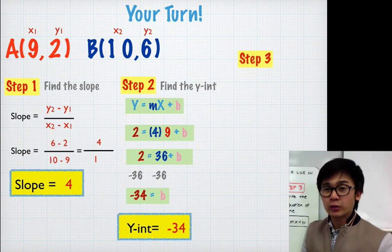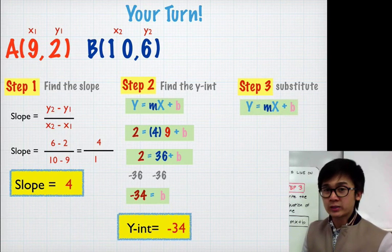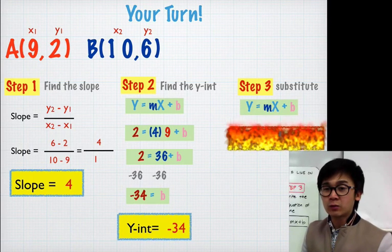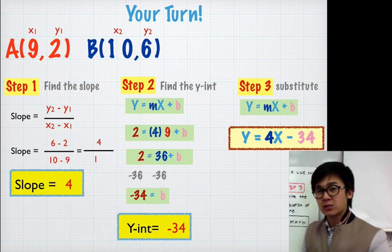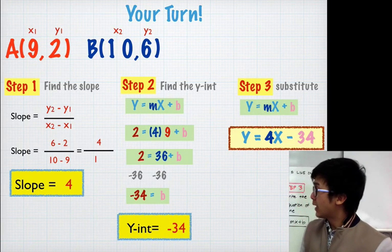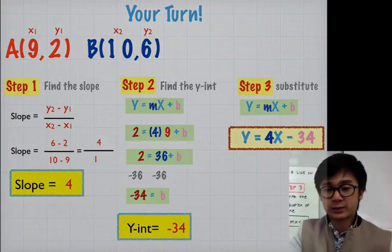Now I'm ready for step 3: writing the equation of a line using y = mx + b. By replacing m and b, the equation of the line is y = 4x − 34. And that is case number 3 in writing the equation of a line given 2 points.